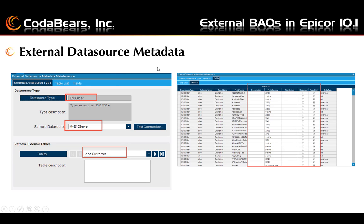The next menu item is external data source metadata. Here you can search for an already defined data source type, then choose the sample data source for that type from the drop-down. Search for and select any or all of the tables that you might want to change or update data columns for. For example, you can enter a description, change the field format, enter a field label which will be displayed on a dashboard or business activity query, and mark if the field is required and/or read only.